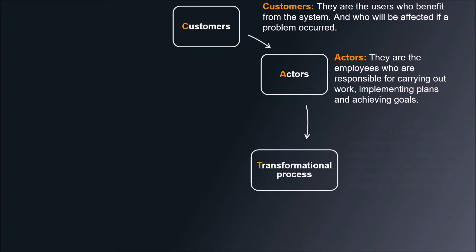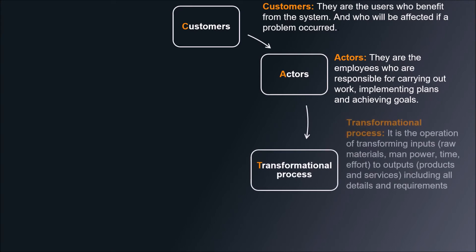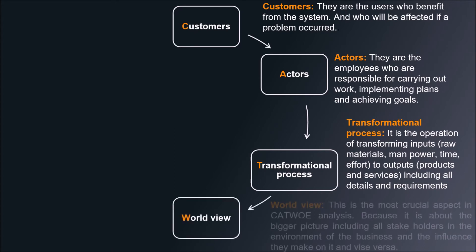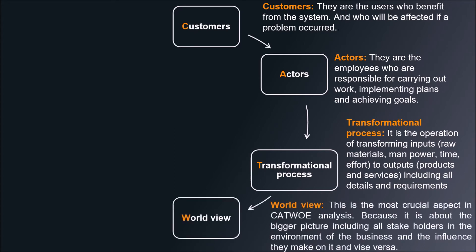Transformation process is the operation of transforming inputs to outputs, including all details and requirements. World view is the most crucial aspect in CATWOE analysis, because it is about the bigger picture, including all stakeholders in the environment of the business and the influence they make on it and vice versa.